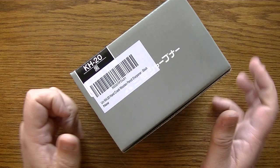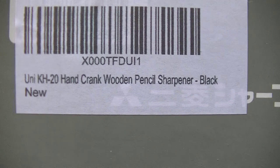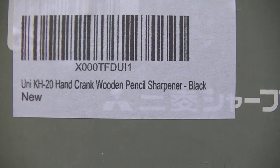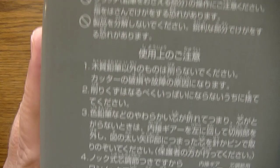Well here it is, this is the box it came in. Just says KH20 and then down here you can see it says it's the Uni KH20 hand crank wooden pencil sharpener black and it's new.